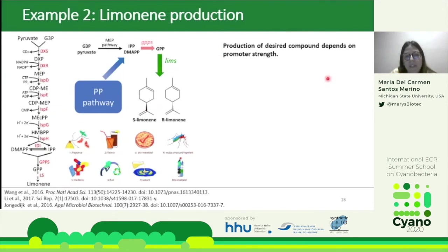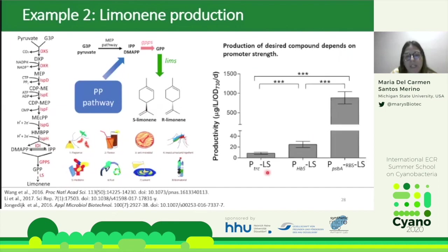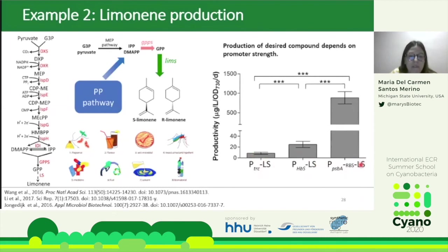As with fatty acids, limonene production depended on promoter strength. Three promoters were tested: PTRC, the endogenous PHBS promoter from a cyanobacterial gene, and a PSBA promoter with a ribosome binding site. The highest limonene levels were obtained with the PSBA-RBS construction, indicating that unlike the fatty acid case where PTRC was best, a different promoter was needed here — possibly because the limonene synthase gene originates from plants rather than cyanobacteria.